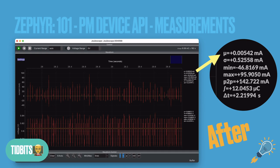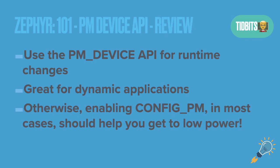Using the device API for runtime changes is great for dynamic scenarios. If you want to turn on a console for a bit for configuration and then turn it off later, this is a great option. Otherwise, enabling the standard power management APIs that do the automatic stuff should work in most cases and will get you most of the way. But if you have special dynamic things going on in your application, you definitely want to check out the Power Management Device API. That's it for this tidbit — thanks for watching and see you on the next one.